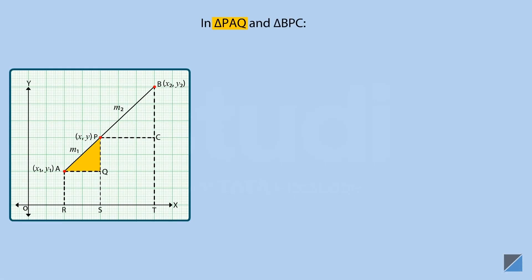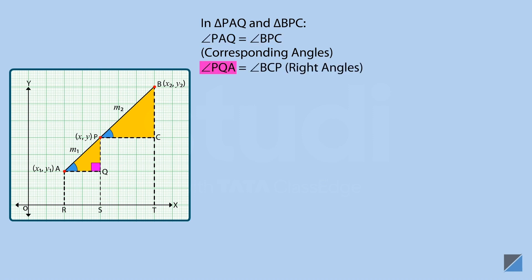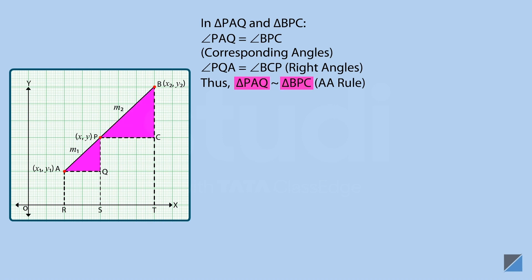In triangle PAQ and triangle BPC, angle PAQ is equal to angle BPC as they are corresponding angles lying between parallel lines. Angle PQA and angle BCP are right angles. Thus triangles PAQ and BPC are similar by the AA test of similarity. Since sides of similar triangles are proportional, the ratio of their sides is equal.